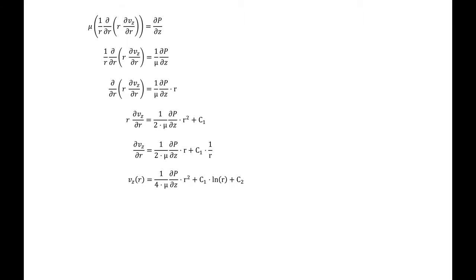I can begin to work my way to a velocity profile by unwrapping the terms on the left hand side of my equation. First of all, I can divide by viscosity and then I can multiply by radius and then I can integrate and then I can divide by radius and then I can integrate a second time, at which point I have one over four mu times del p del z times r squared plus c one times the natural log of r plus c two.